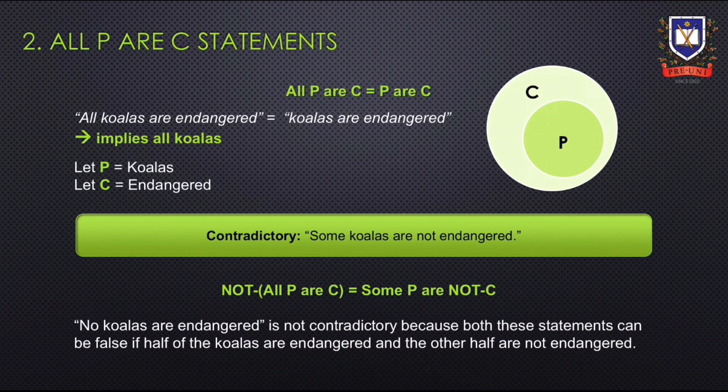We'll first discuss 'all P are C' statements. Saying all P are C is the same as saying P are C. For example, saying all koalas are endangered is the same as saying koalas are endangered, where it is implied that we are talking about all koalas. The Venn diagram shows this relationship where P represents the koalas and C represents endangered. The contradictory of this statement is 'some koalas are not endangered.' Some may think that 'no koalas are endangered' is the contradictory, but both these statements can be false at the same time if half the koalas are endangered and the other half are not.